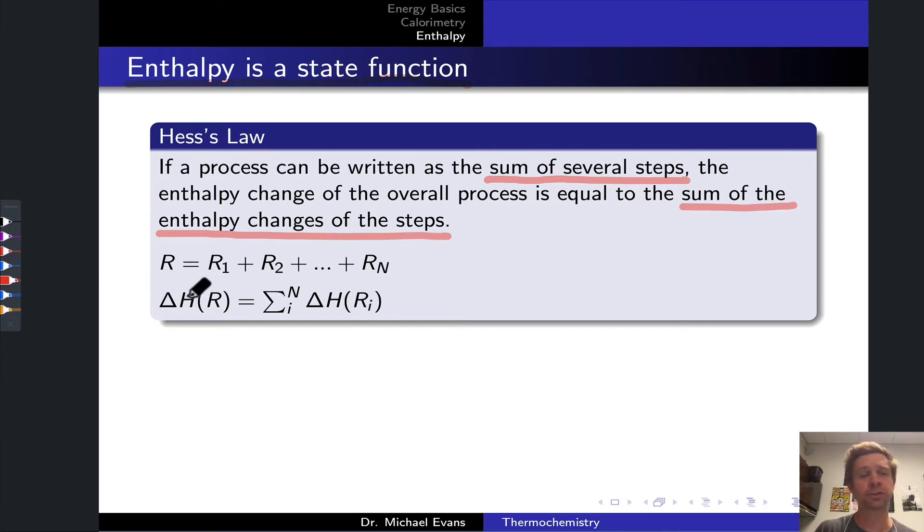And so in mathematical form, say we have a reaction R. That overall reaction can be expressed as the sum of other reactions, a series of n other reactions: R1 plus R2 plus R3, etc., all the way to Rn. Because the overall reaction can be expressed as a sum of these sub-reactions, the overall enthalpy change for the reaction R is equal to the sum of the enthalpy changes for the individual sub-reactions. This is the essence of Hess's Law.